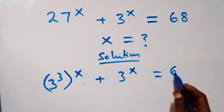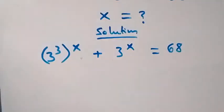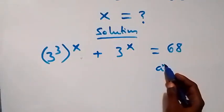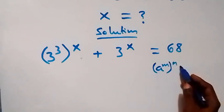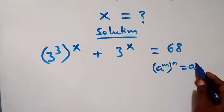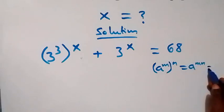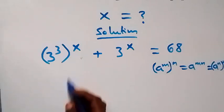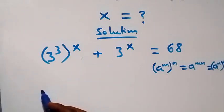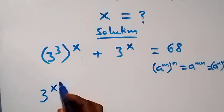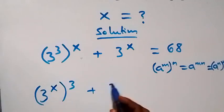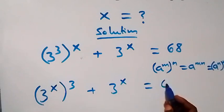This equals 68. From the law of indices, a raised to power m raised to power n is the same as a raised to power mn, which can also be written as a raised to power n raised to power m. So we can interchange, and we have 3 raised to power x raised to power 3, plus 3 raised to power x, equals 68.